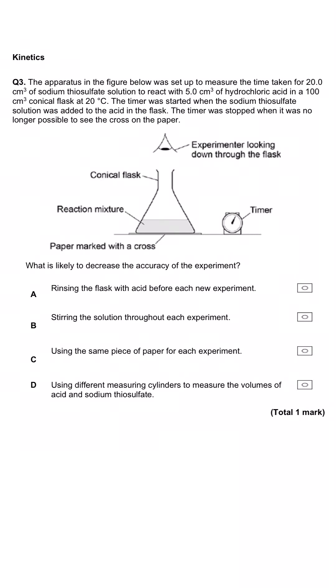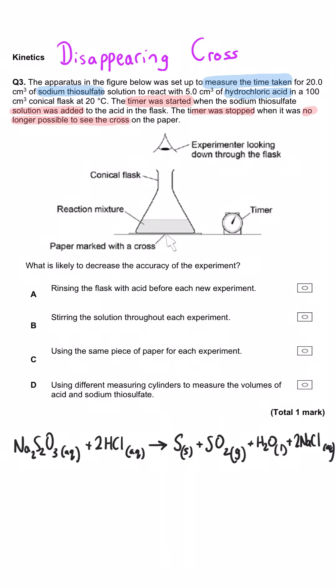The apparatus shown was set up to measure the time taken for 20 cm³ of sodium thiosulfate to react with 5 cm³ of hydrochloric acid in a 100 cm³ conical flask at 20°C. The timer started when sodium thiosulfate was added and stopped when it was no longer possible to see the cross on the paper below — the experimenter looks down through the flask at the cross. This reaction produces a precipitate of sulfur that obscures the cross.